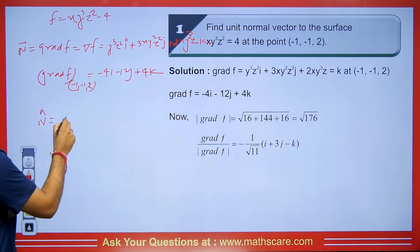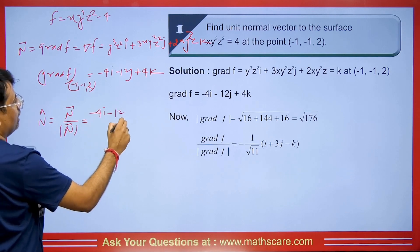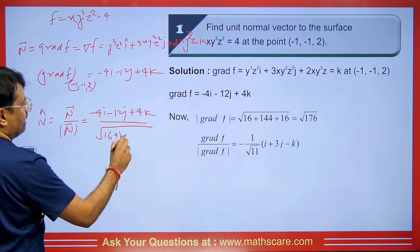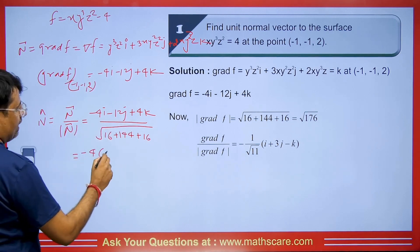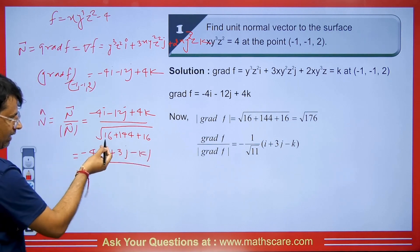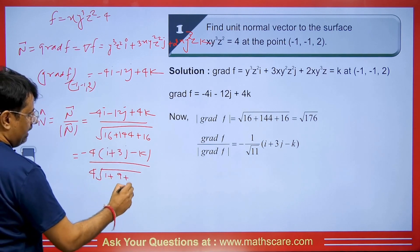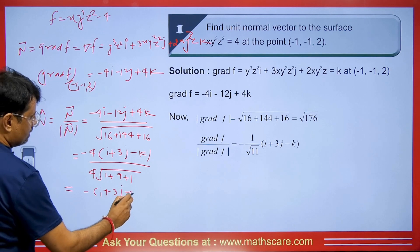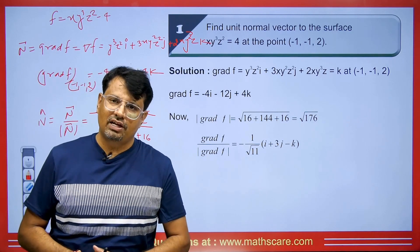Now we need to find the unit normal vector: normal vector divided by mod of normal vector. That gives (−4i − 12j + 4k) / root(16 + 144 + 16). Taking minus 4 as common from the numerator gives i + 3j − k, and taking 16 as common under the root simplifies things. After cancellation, the unit normal vector is (−i + 3j − k) / root 11.